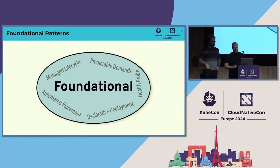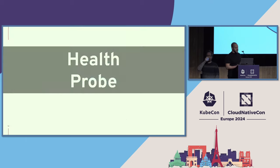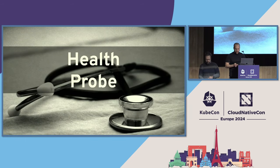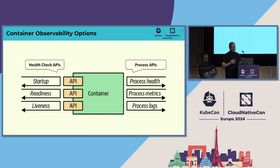We'll start with foundational patterns. These are so important that you can think of them as foundational principles that every containerized application must implement in order to become good cloud-native citizens. We'll start with the health probe pattern. The idea of the health probe is how an application can communicate its health and status to the platform without exposing its internal implementation. When you run an application on Kubernetes, it will perform process health checks — if the process dies, the kubelet will restart it on a node, making your application more resilient.